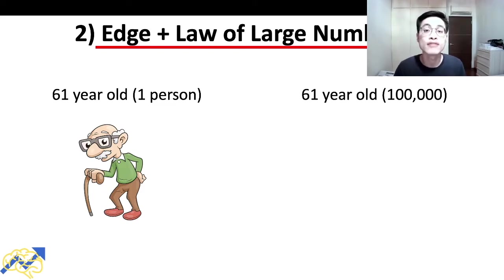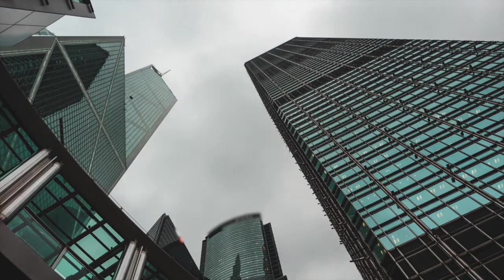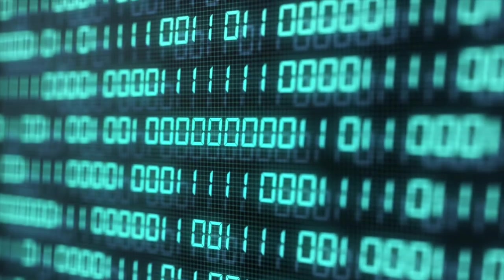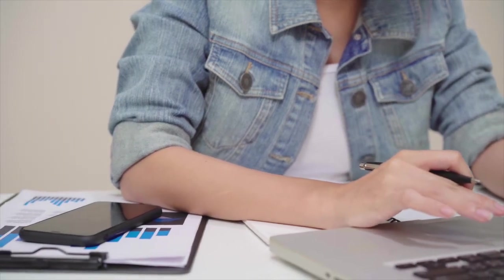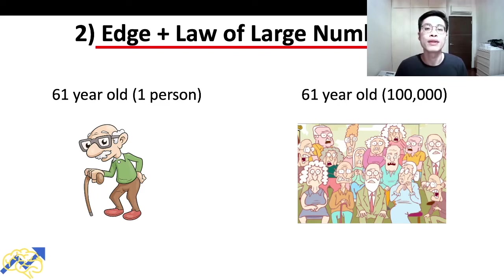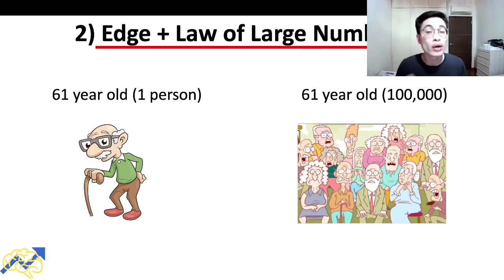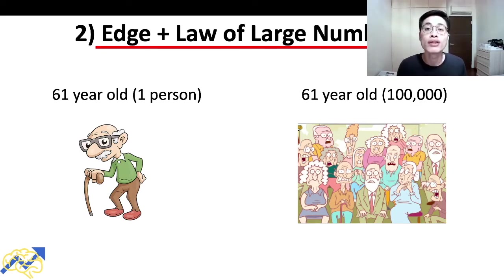Say 100,000 people who are 61 years old — this is what insurance companies do. They can't predict for any single individual, but they can for a larger sample size. If the life expectancy for a large group of 61-year-olds is 20 more years, it doesn't mean every single one will live exactly 20 more years. Certain individuals will live longer and certain shorter, but on average their life expectancy is another 20 years.